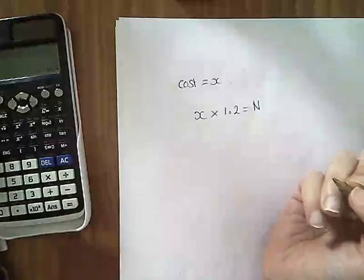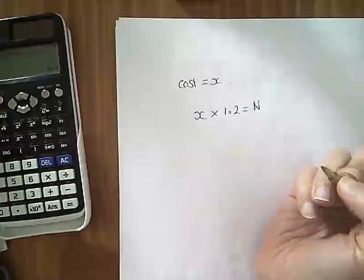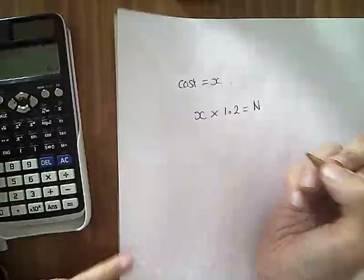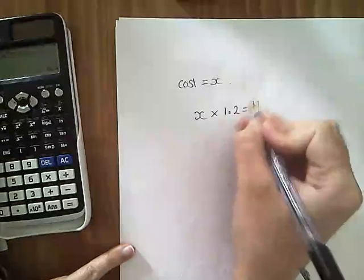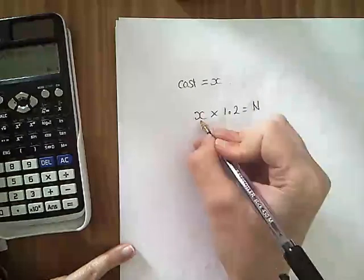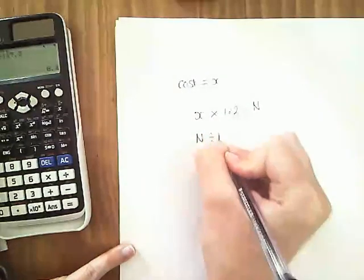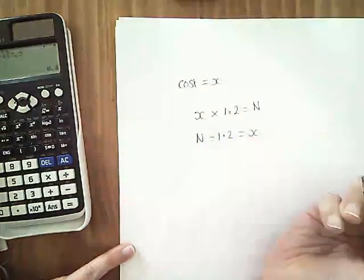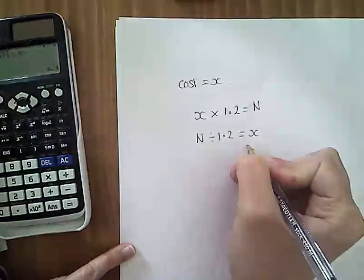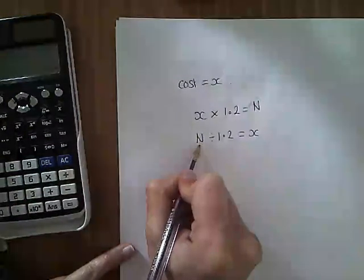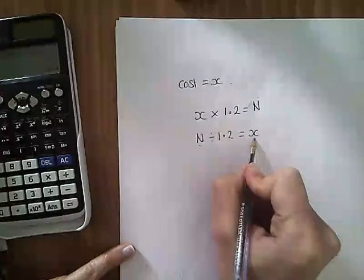Okay. Excuse me. So, if we've been given N, which includes the VAT, to find it excluding the VAT, I can do N divided by 1.2 to give me X. I'm just working backwards there. So, that's the amount including VAT to give me the amount excluding VAT.